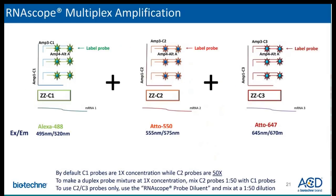The multiplex fluorescent assay utilizes the same amplification system and is similar to the duplex chromogenic assay. Three independent amplification trees are built such that the C1, C2, and C3 probes will have their own amplification trees stemming from where the probe has bound to the mRNA transcript. The signal can then be visualized from the three independent fluorescent label probes. If you're interested in using just the C2 or C3 probes by themselves, you'll use the RNAscope probe diluent; otherwise, mix them with the C1 probe at a 1:50 dilution.